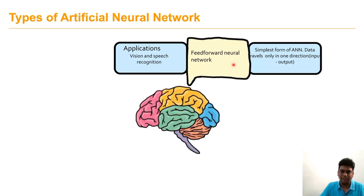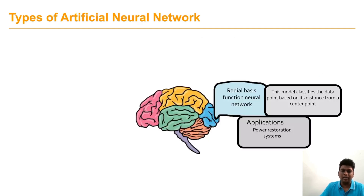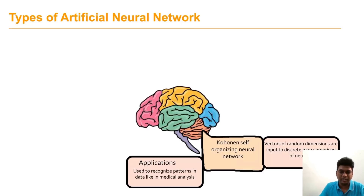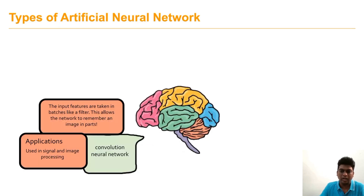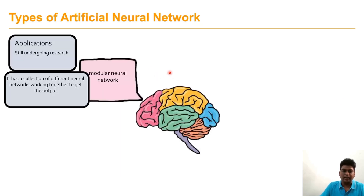The types of artificial neural networks are: feed-forward neural network, the simplest form of ANN, used for vision and speech recognition; radial basis function network, used in power restoration systems; self-organizing neural network, which recognizes patterns in medical analysis; recurrent neural network, where the hidden layer saves its output for future predictions, used in text-to-speech conversion; convolutional neural network, with applications in image and video processing; and modular neural network, which is still under research.